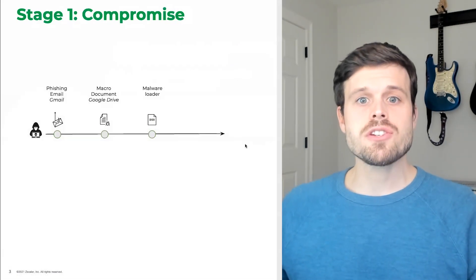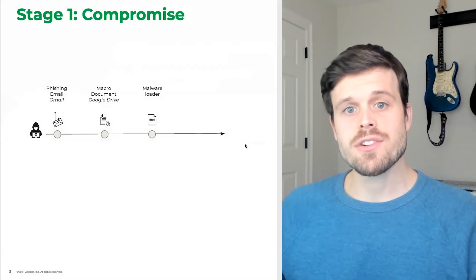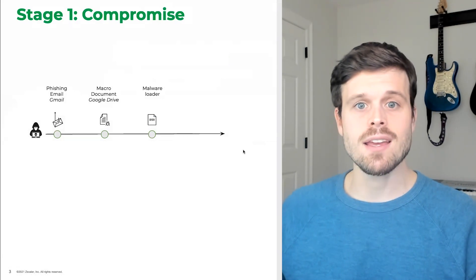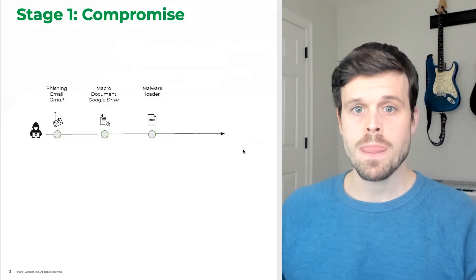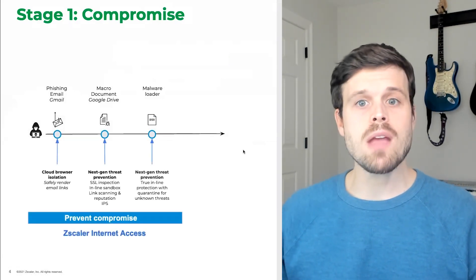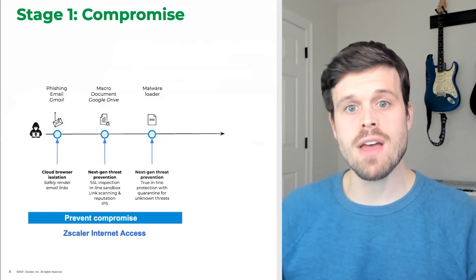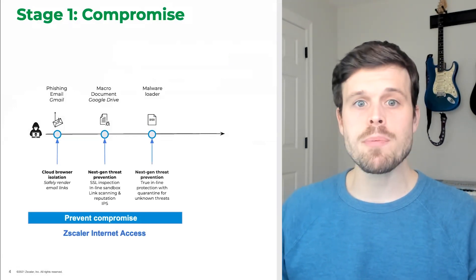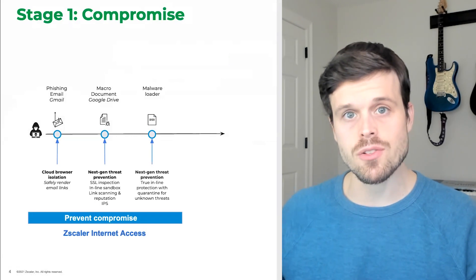First, attackers start by infiltrating your system from the internet, whether through a phishing attack, an exploit, or brute force. The secure web gateway capabilities of SSE help prevent this with inspection, malware protection, and least privilege access control.